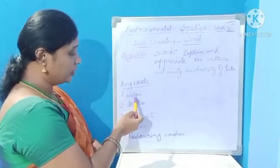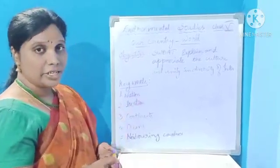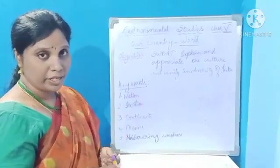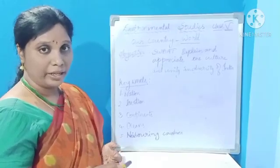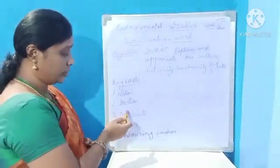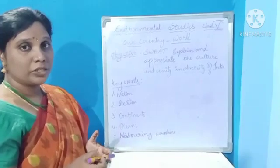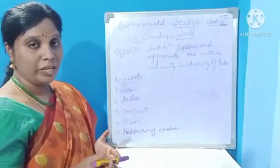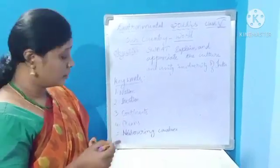First keyword: Nation. Nation is a place, a large area like a country. Next, location. Location means situated in one particular place.